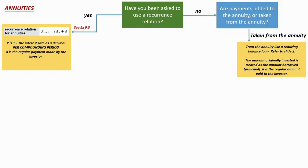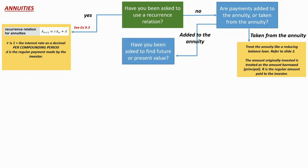If you're taking money out of the annuity, treat the amount originally invested as the amount borrowed, and R is the regular payment made to you, the investor. If you're adding payments to the annuity, move to the next question: have you been asked specifically to find the future value or the present value? You're hoping the question explicitly tells you which one it is, since some questions can be a bit ambiguous.